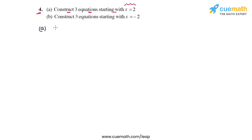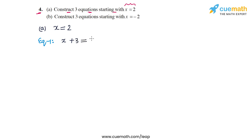In the first part, x is equal to 2. Let's create our first equation. We can add any number to x — for example, x plus 3. Since x equals 2, x plus 3 is equal to 5. So this is one possible equation in x.